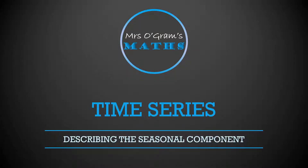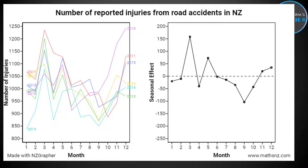We've had a look at describing the long-term trend. The next thing you want to look at is whether there is a seasonal component to your time series. Here we've got the graph where we can see the seasonal effects more easily. On the previous video we had the long-term trend to do with road accidents. This is a similar dataset but looking at reported injuries, whereas before we looked at casualties. These are the number of reported injuries from road accidents in New Zealand from 2011 up to 2016, split into the different months in each year.